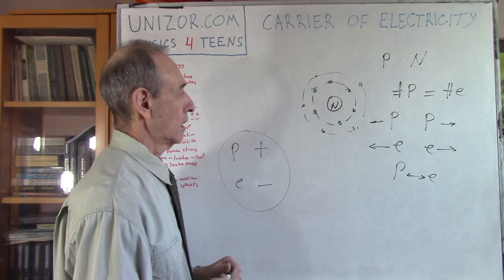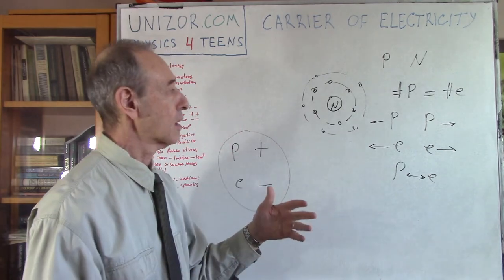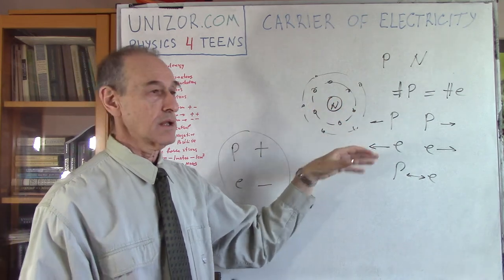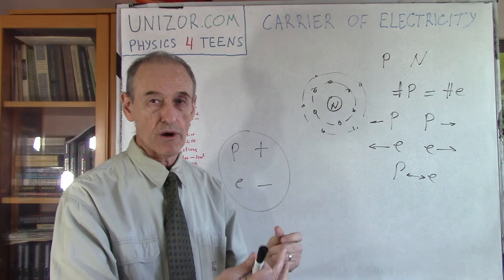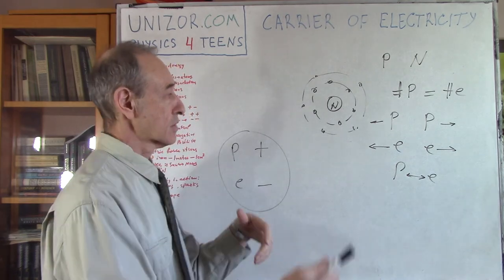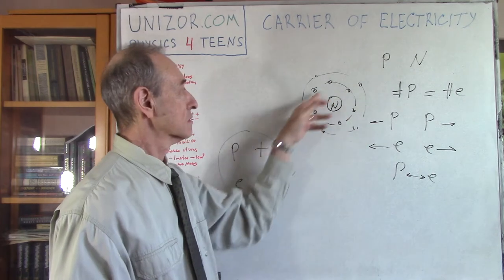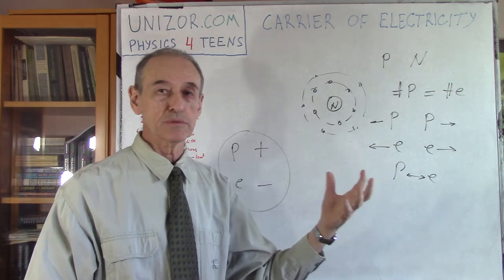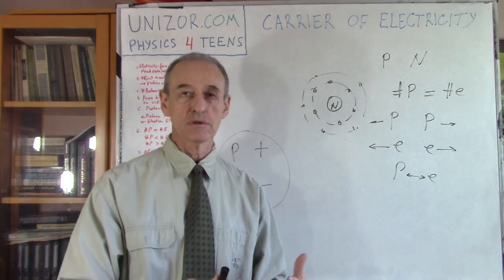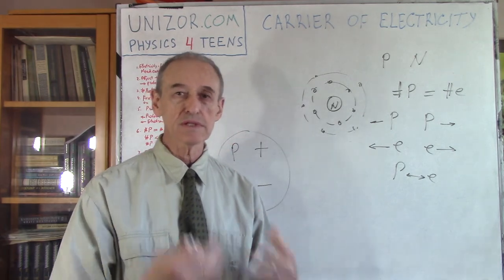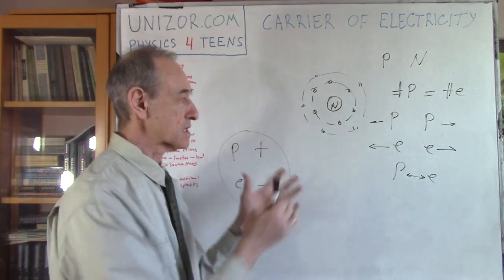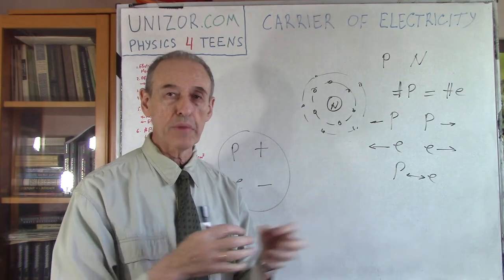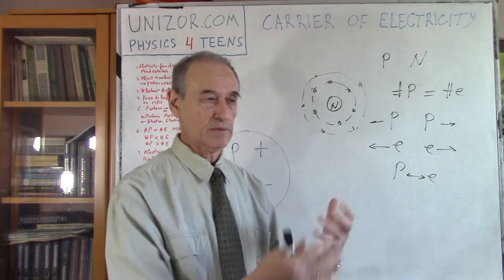If you have more electrons in an object than protons, the whole object becomes more negatively charged because there is an excess of electrons. If there is a deficiency of electrons — meaning there are certain protons which do not have corresponding electrons — the whole object becomes positively charged. This is the language physicists use to describe the property of protons and electrons to attract or repel each other based on their combination.